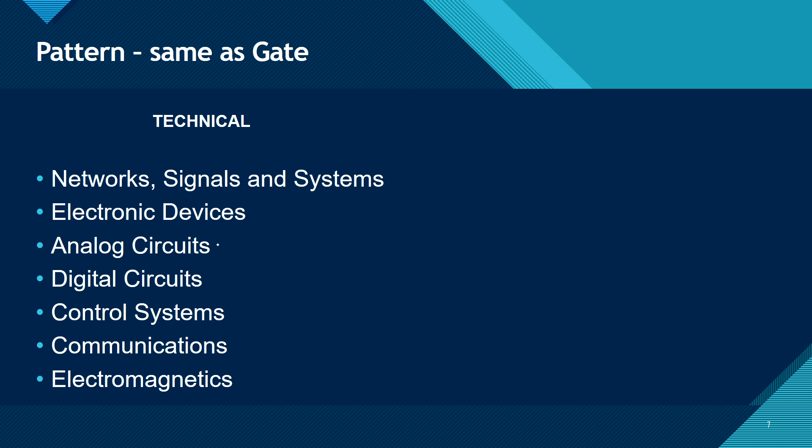You have your technical syllabus: networks, signals, electron devices, analog, digital, control systems, communication, electromagnetics. In digital you have 8085 and the syllabus of this you can refer in detail. This is your old syllabus, old GATE syllabus, not GATE 2021 syllabus. This is not the syllabus for Sameer - the old GATE syllabus is the actual syllabus.